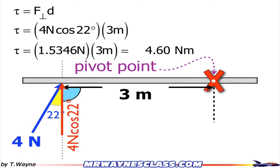So the torque, which is abbreviated with the Greek symbol tau, looks kind of like a fancy capital T, is the perpendicular component of force times distance. So the torque is 4 newtons cosine 22 degrees times 3 meters. So the torque is 4.60 newton meters.